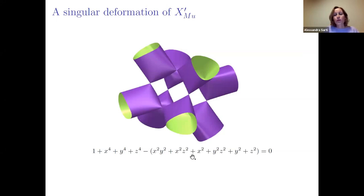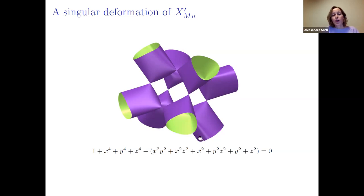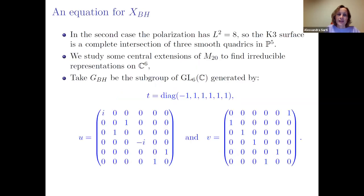I wanted to show a picture of X_mu, but a picture in the real world is not connected. I modified the parameters slightly — a kind of deformation — to find a nicer picture. It's not exactly X_mu but the family should have 12 singularities. Just for fun, to see another K3 surface.